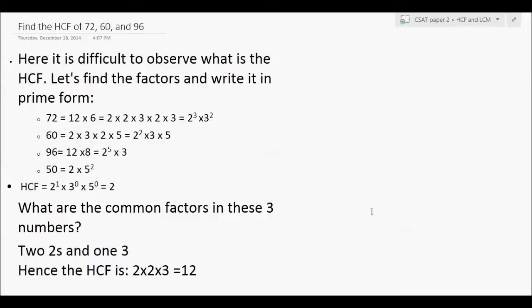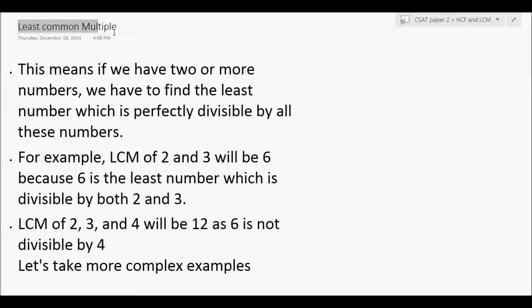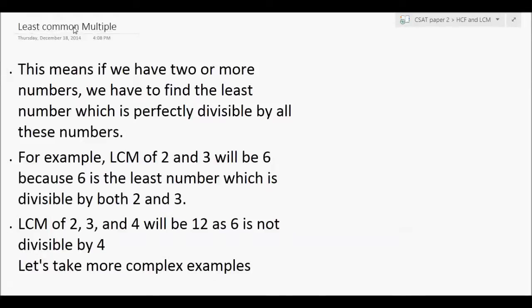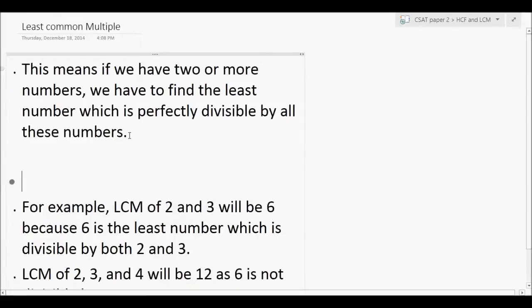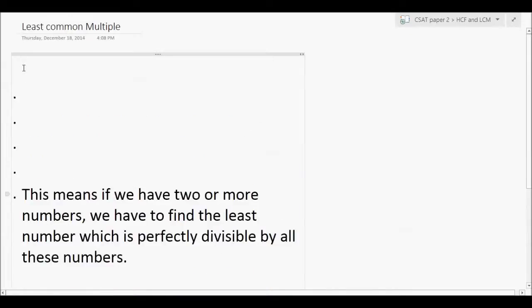I hope you understand how to find the Highest Common Factor or Greatest Common Divisor. Now let's look at LCM — Least Common Multiple. When we say least common multiple, we are obviously talking about two or more numbers. Let's take an example and understand it before jumping into the definition. Let's take numbers 4 and 6.